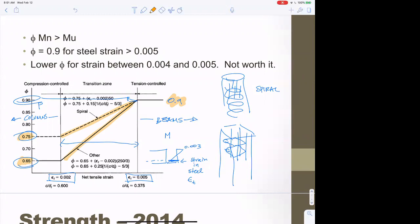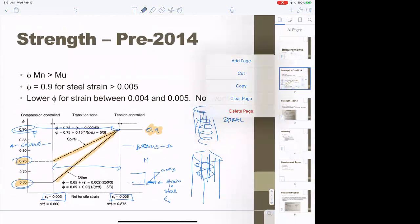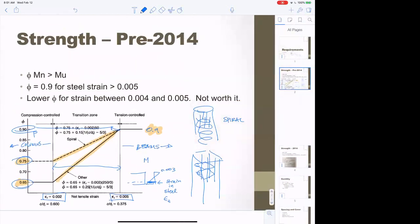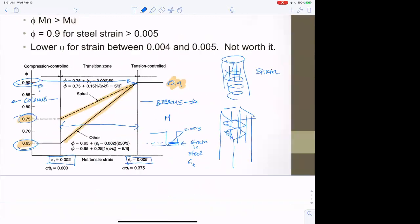The strain in the steel is governed by how much steel you put in. Remember, the less steel you put in, the higher the strain. We went over deriving the maximum amount of steel, so if you can control the amount of steel there, you can get phi of 0.9.